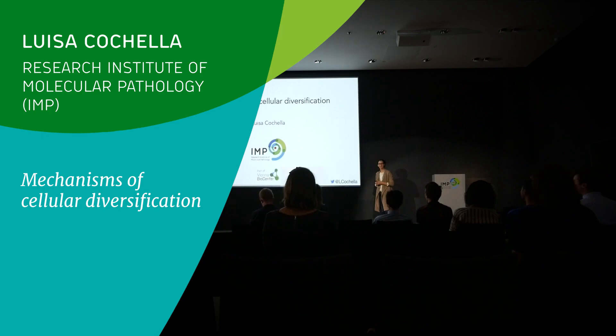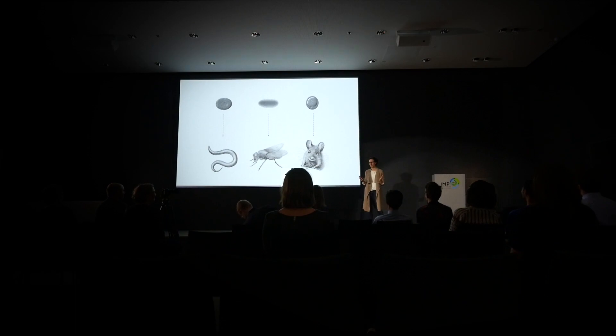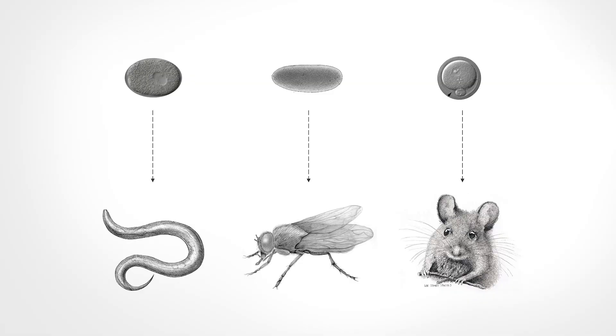Hello, my name is Luisa Coachella. I am a group leader at the IMP, part of the Vienna BioCenter. In my lab, we're fascinated by the process through which a single cell gives rise to a multicellular organism with a huge diversity of different cell types that are reproducibly arranged into tissues and organs. The particular aspect we're interested in is how different cell types are diversified and specialized during development.